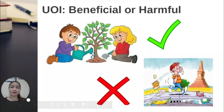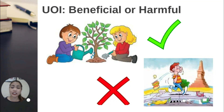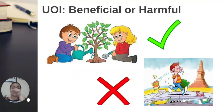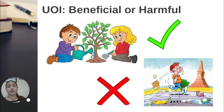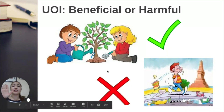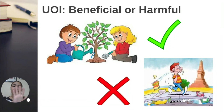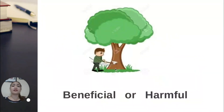Hi guys, Ms. Rowan is here and I'm going to talk about the T-chart in UOI when it comes to grouping beneficial actions and harmful actions. When I say T-chart, it's like the letter T — you will see a T-line like this, and on one side you put one group and on the other side you put the other group. For example, we are talking about beneficial and harmful actions, which means we have to group them — beneficial means good and harmful which is bad.